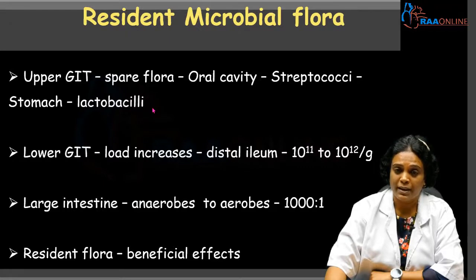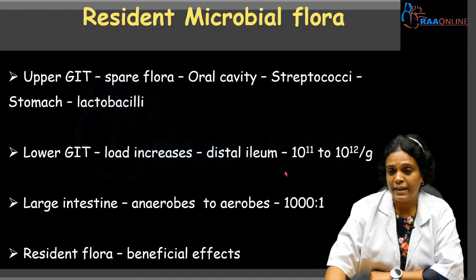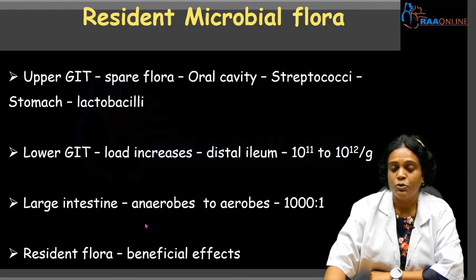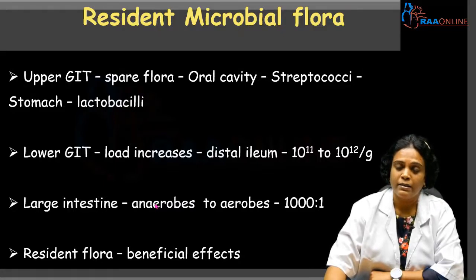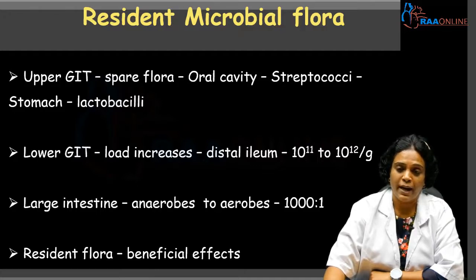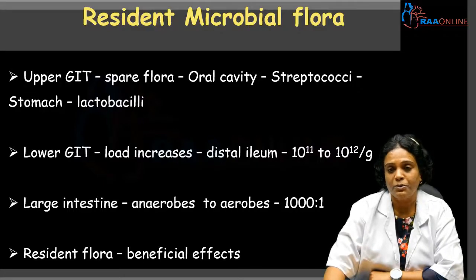Coming to the lower gastrointestinal tract, the load of the microbial flora increases. As we go to the distal ileum, the microbial flora increases to 10 to the power 11 to 10 to the power 12 per gram of fecal material. The large intestine is superseded by anaerobes compared to aerobes — the ratio is usually 1000 to 1. These resident flora also have beneficial effects: some microorganisms synthesize vitamins and also prevent pathogenic organisms from colonizing.